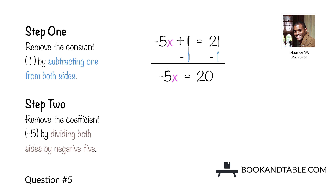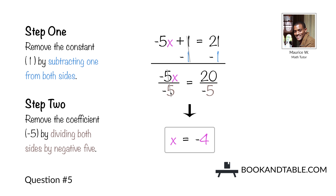Now we must remove the coefficient negative 5. Step two: remove the coefficient negative 5 by dividing both sides by negative 5. We wind up with x on the left side, and on the right side 20 divided by negative 5 is equal to negative 4. So the answer to question number five is x is equal to negative 4.